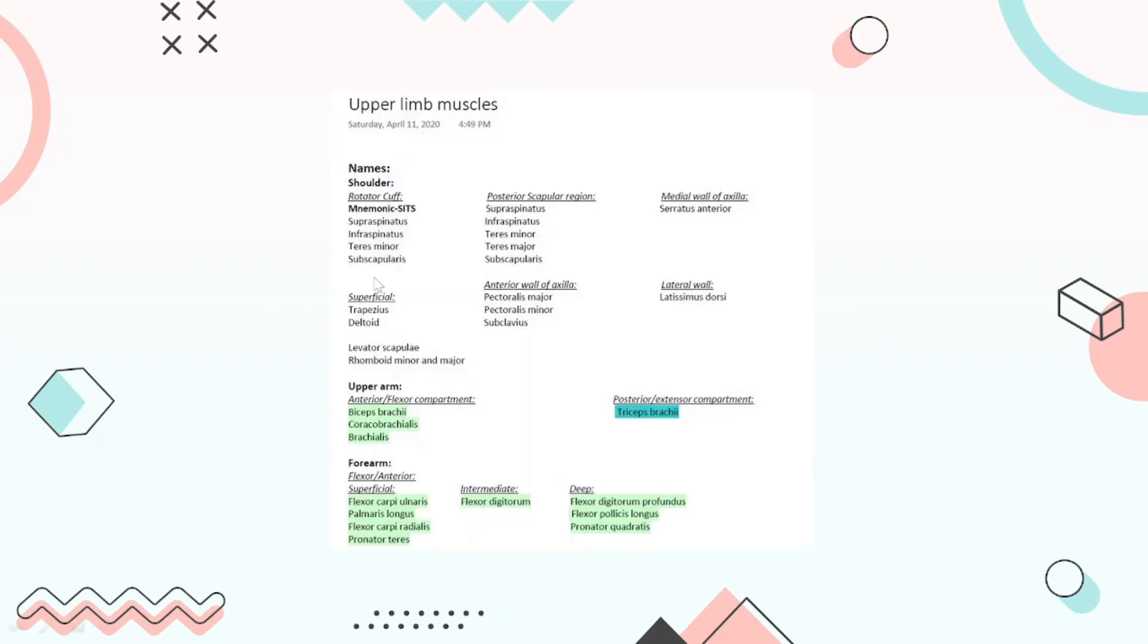So these are my notes from first year, and as you can see I have divided the muscles into different compartments like shoulder girdle, then upper arm and forearm.